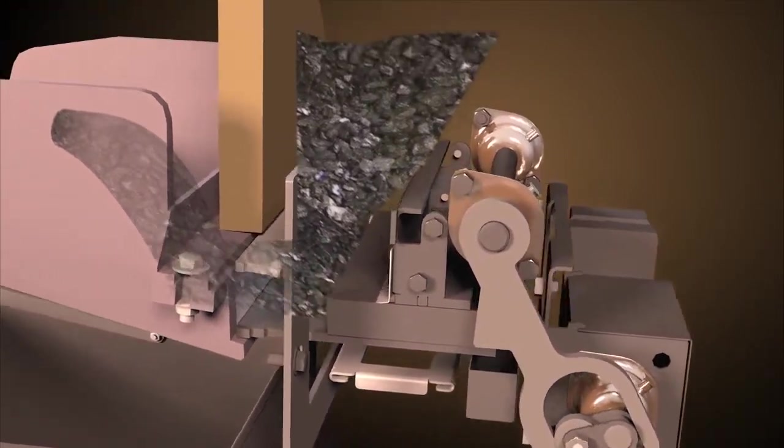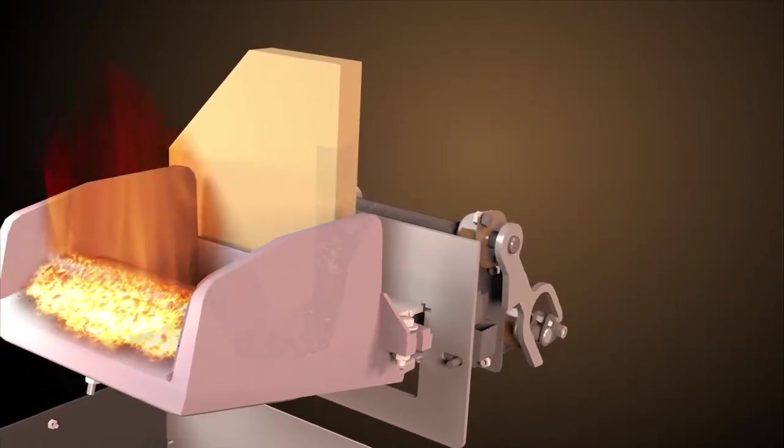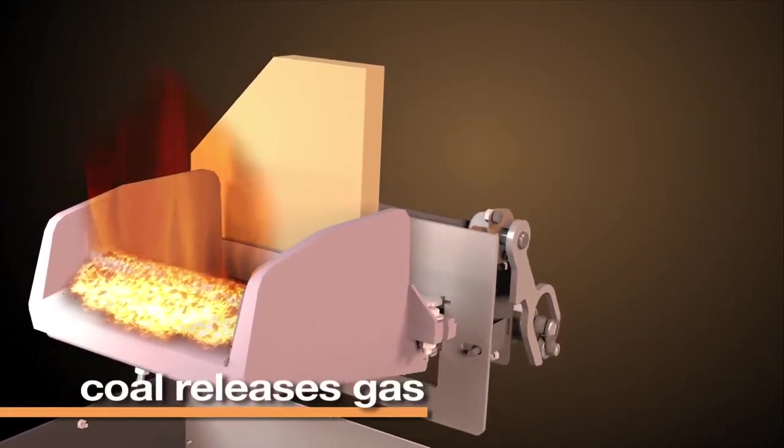Coal continues to be pushed up through the tunnel to the feeder entrance. Here, the coal gets hot and starts releasing gases before it reaches the fire.